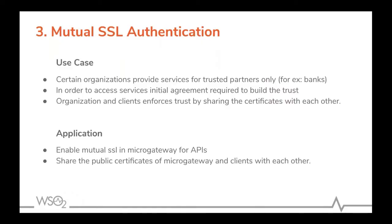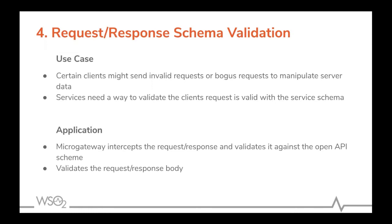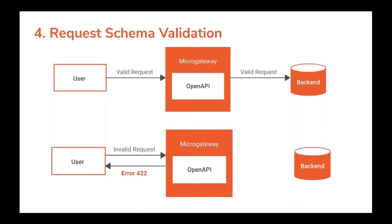We support mutual SSL authentication, allowing only trusted clients — who have shared certificates with the gateway — to invoke services. Micro gateway also supports request and response schema validation: based on the OpenAPI definition schema, the micro gateway validates incoming requests and outgoing responses. If a request is valid according to the OpenAPI definition it is passed to the backend; if invalid, the client receives error code 422.